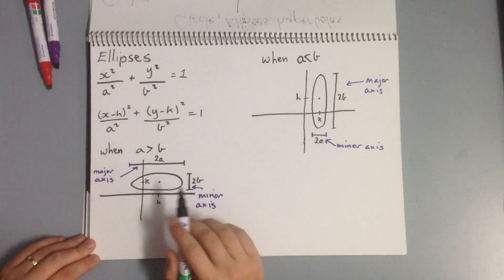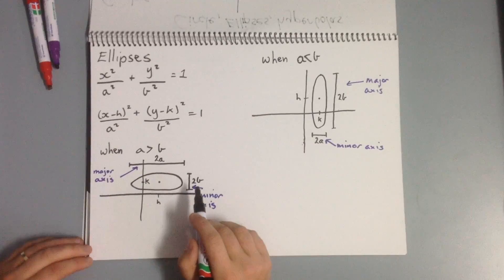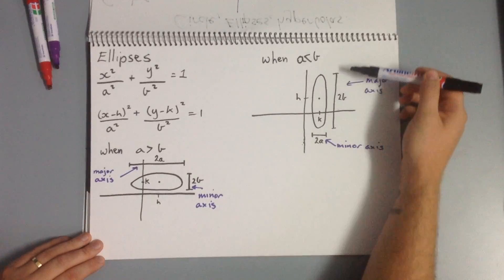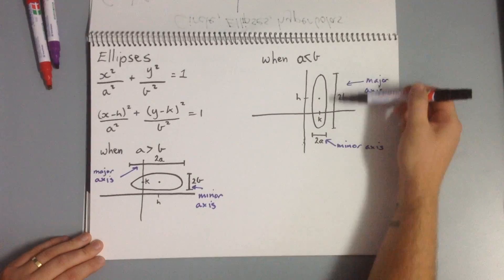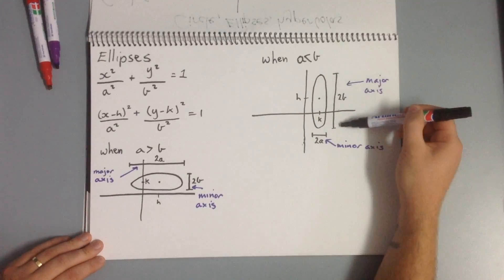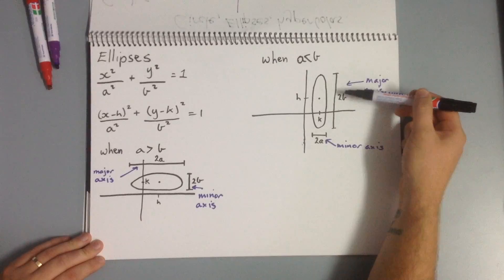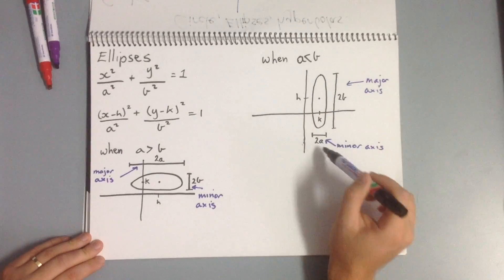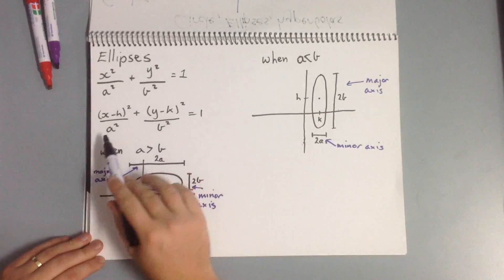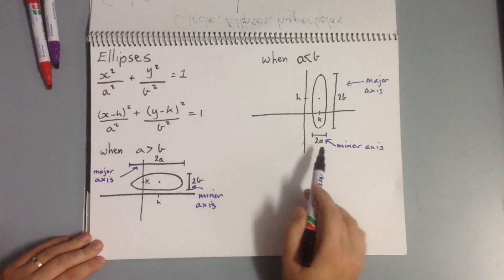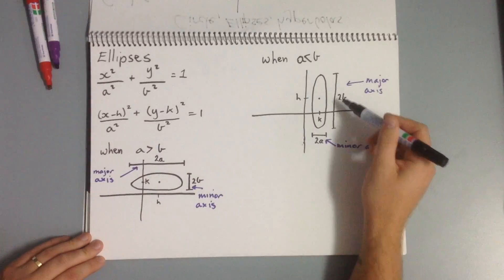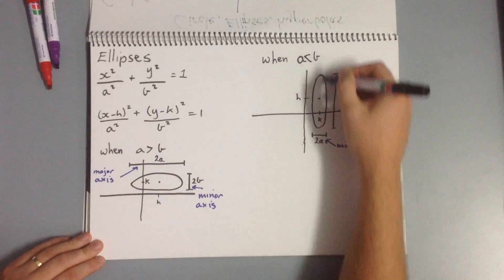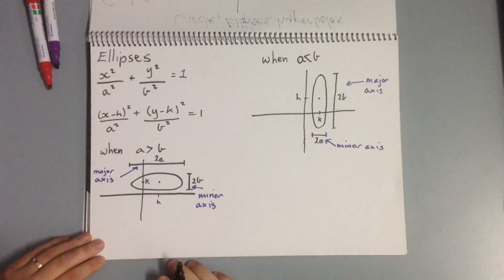When a is less than b, our center is still at (h, k), but this time our major axis is our vertical axis, still equal to two times b. Our minor axis is still two times a. But since b is bigger than a, the ellipse will be stretched vertically.